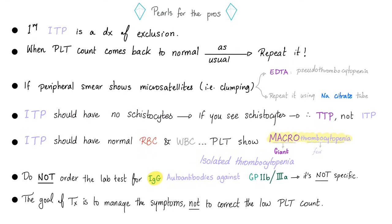Primary ITP is a diagnosis of exclusion. If platelets come back normal, repeat the test. If peripheral smear shows microsatellites or platelet clumping, it means EDTA from the purple top tube caused pseudo-thrombocytopenia — use a blue top tube with sodium citrate and repeat the test. ITP should have no schistocytes; if you see schistocytes, it means TTP, not ITP. ITP should have normal red blood cells and white blood cells — only platelets should be abnormal. This is called isolated thrombocytopenia.